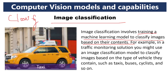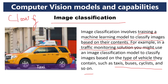For example, in a traffic monitoring solution — at crossroads and main junctions there will be a traffic monitoring system to control traffic. Many vehicles will come like taxis, buses, cycles, and so on. Classifying an image based on the type of vehicle is an example. Seeing a picture, the computer can tell that it is a car; if a bus picture is shown, the computer can tell it is a bus.